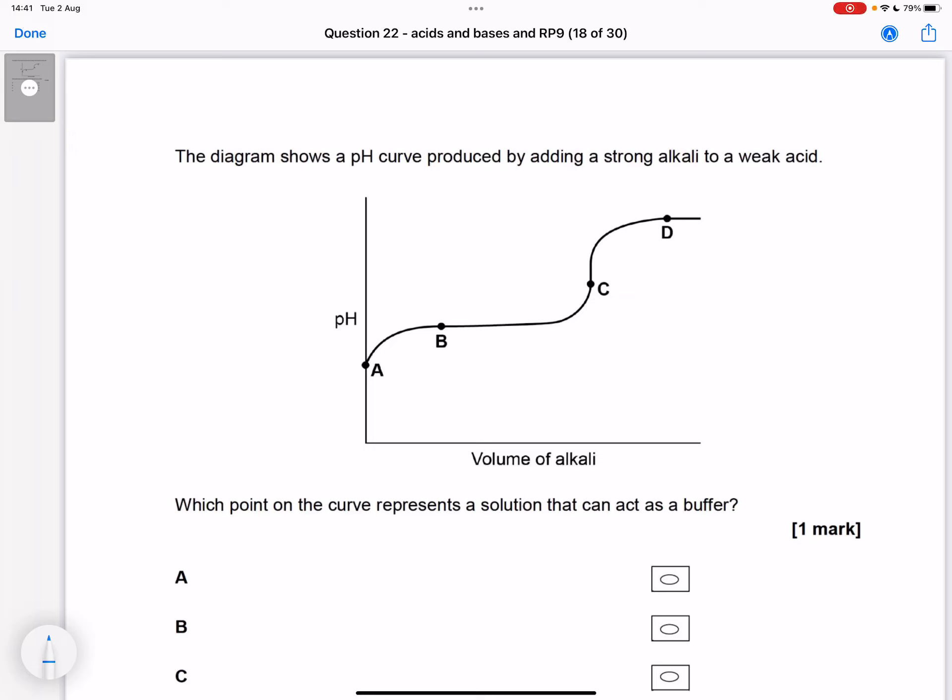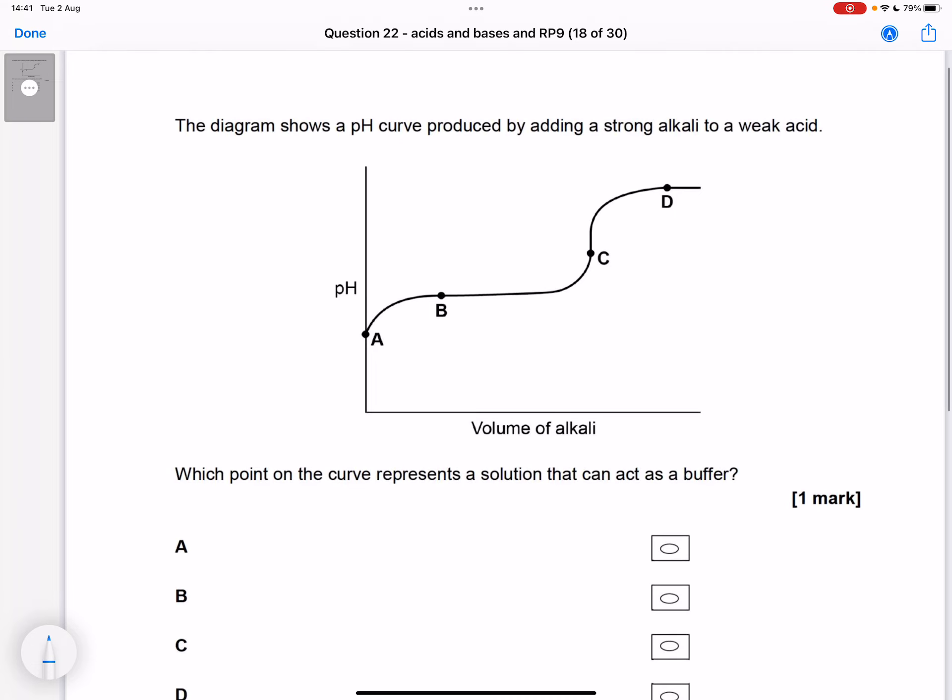The diagram shows a pH curve produced by adding a strong alkali to a weak acid. Where is it a buffer?